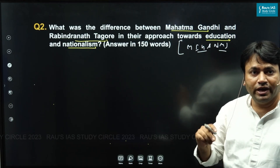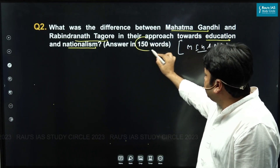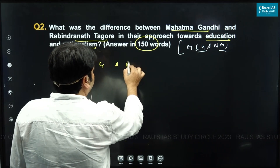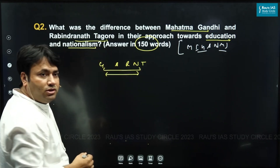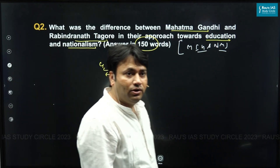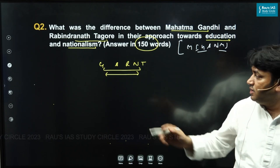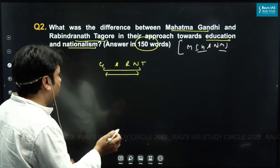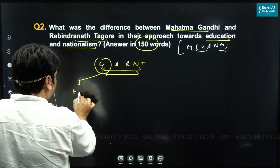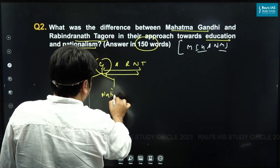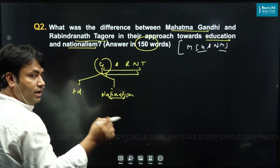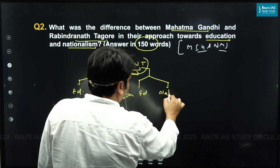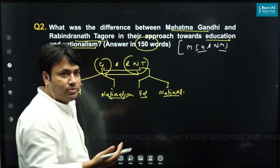The most challenging part of this question is that we have to write the answer within a specified word limit of 150 words. This topic itself is very broad — Gandhi and Rabindranath Tagore are the most important personalities, with great contributions to the freedom of our country and in evolving India as a nation.